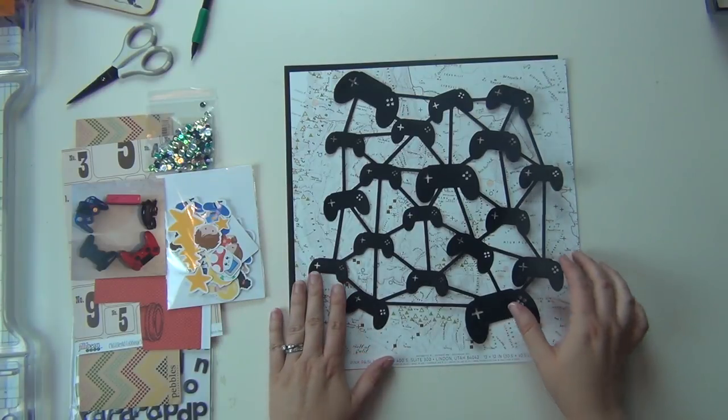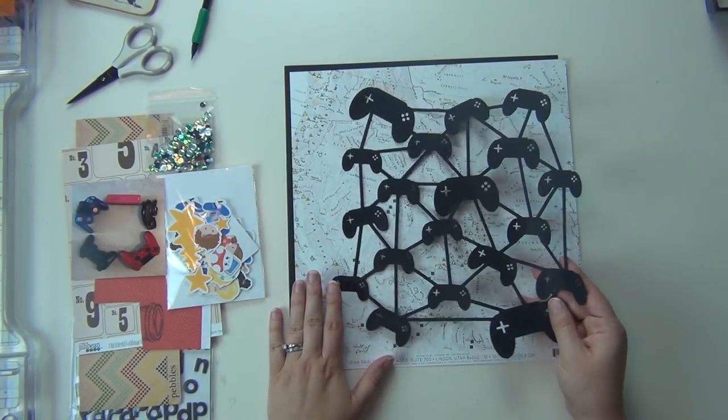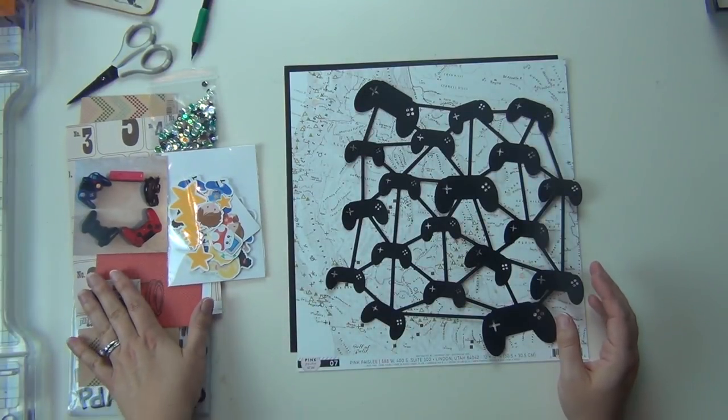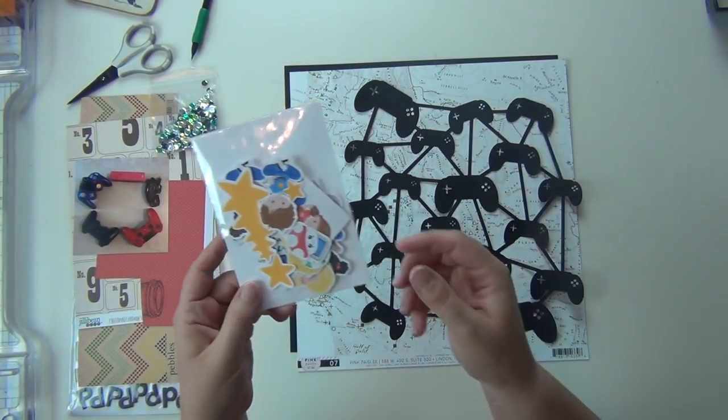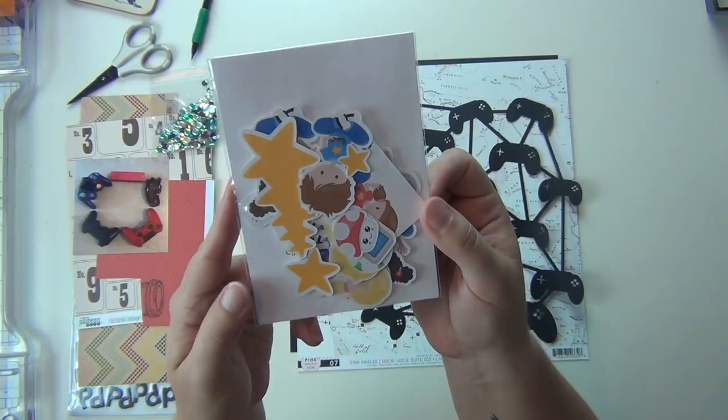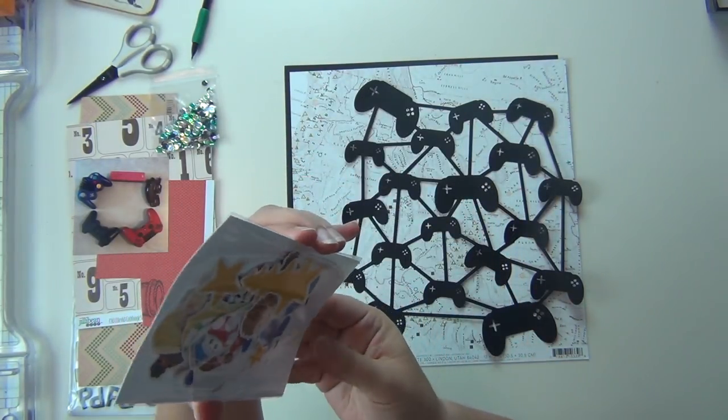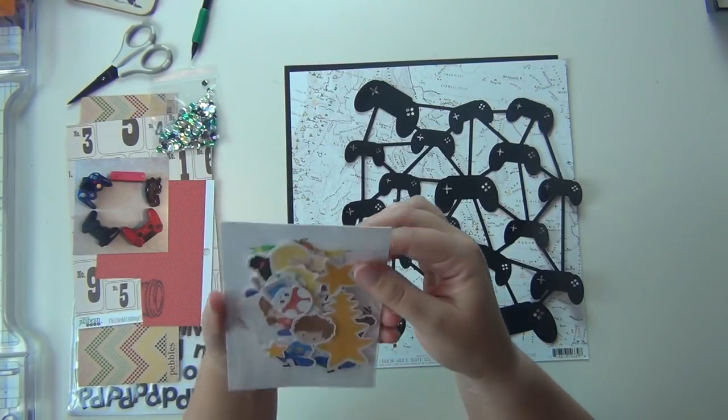I'm going to go ahead and start getting to work. I'm going to use this cut file here on top of this map paper that I found, and then I'm going to use a couple things here including this Cheeky Studio die cut pack that is called, I'm trying to remember, I think it's called Game On.